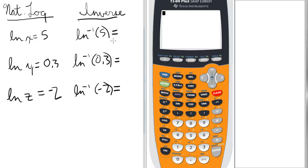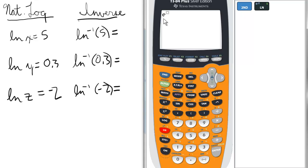On the calculator to access this function, the inverse natural log function, we press 2nd and ln. Notice it's an e raised to a power. So, e to the 5 is 148.4.